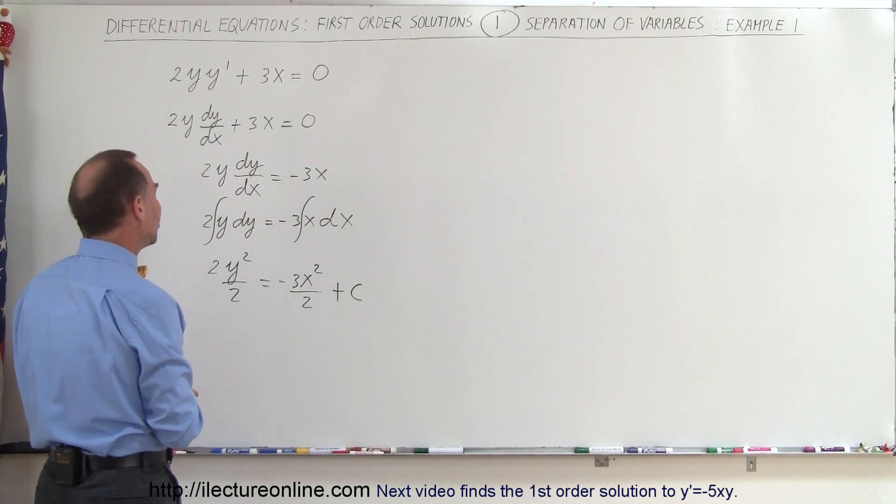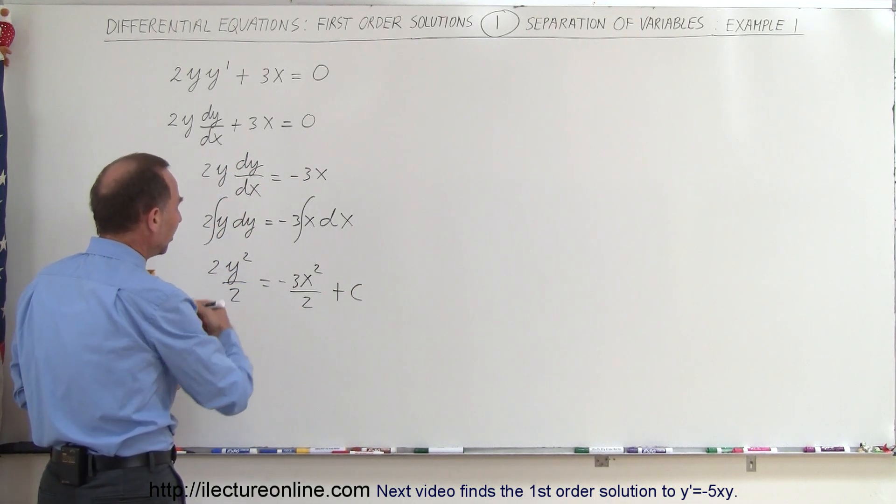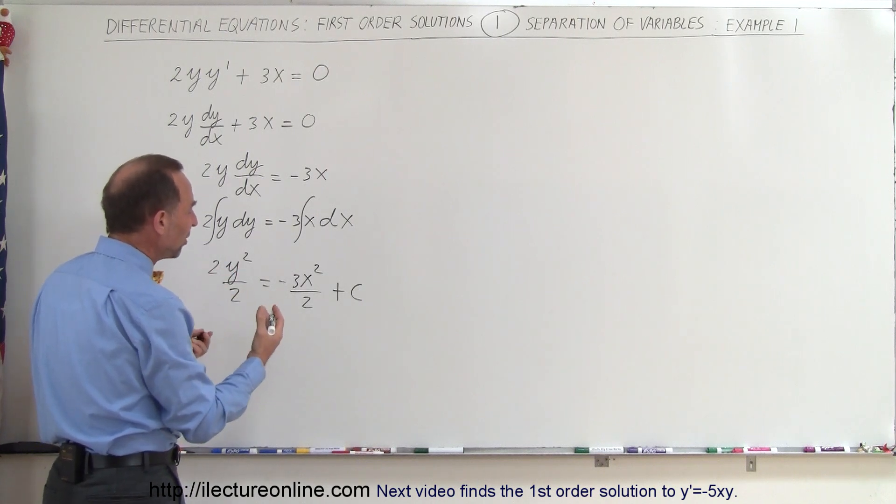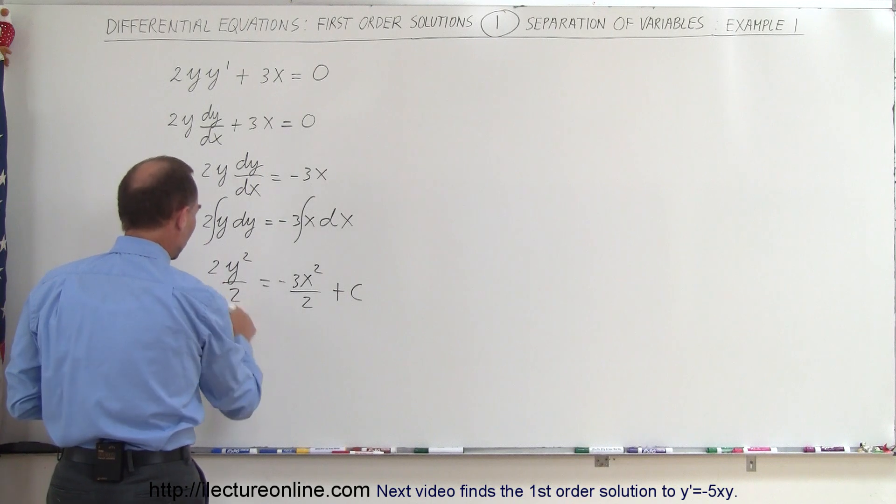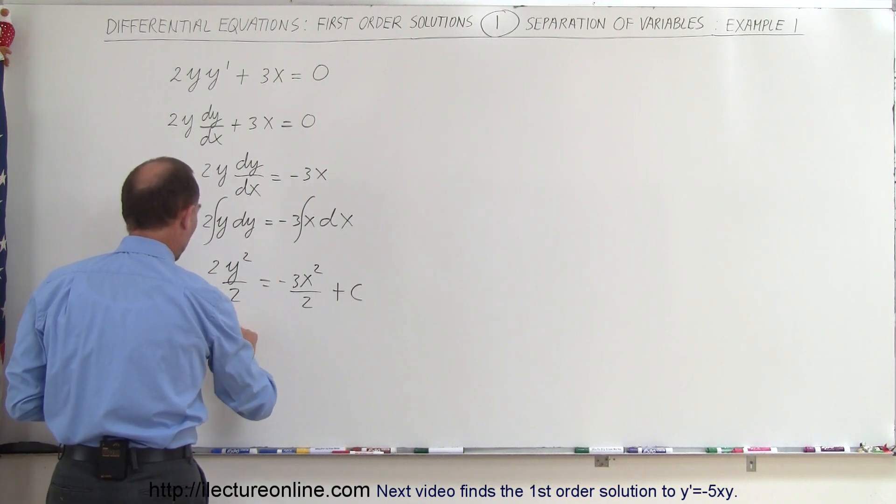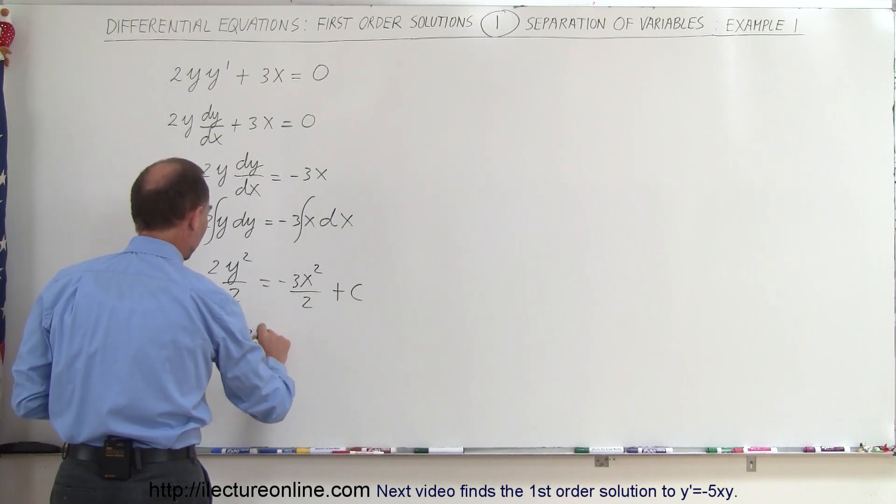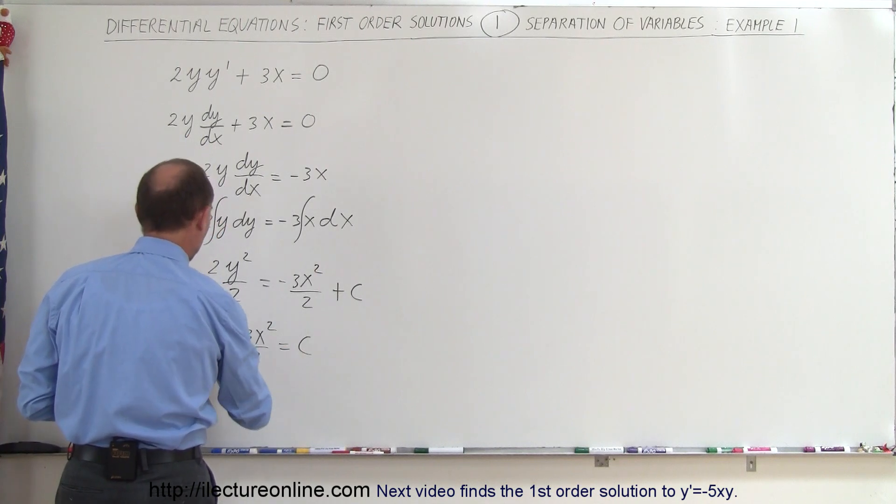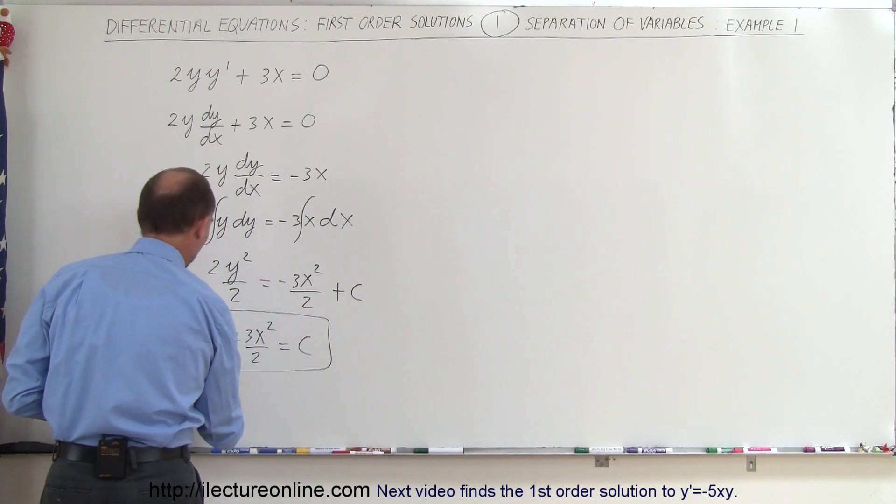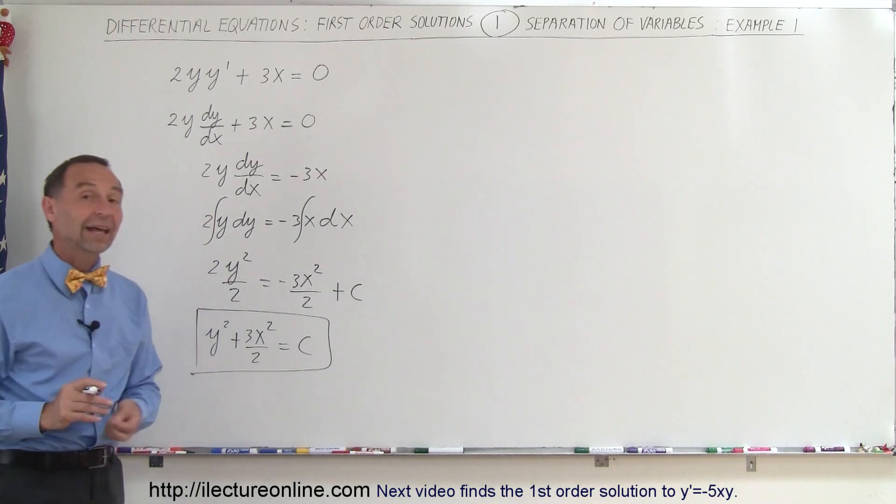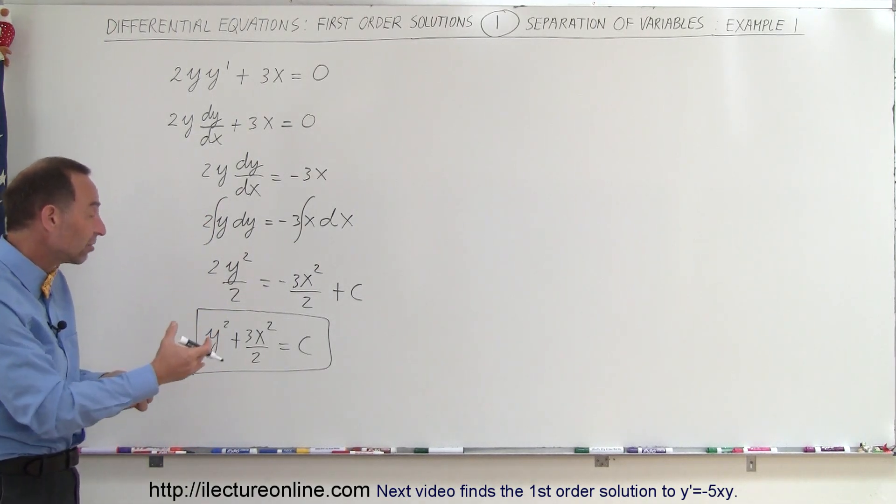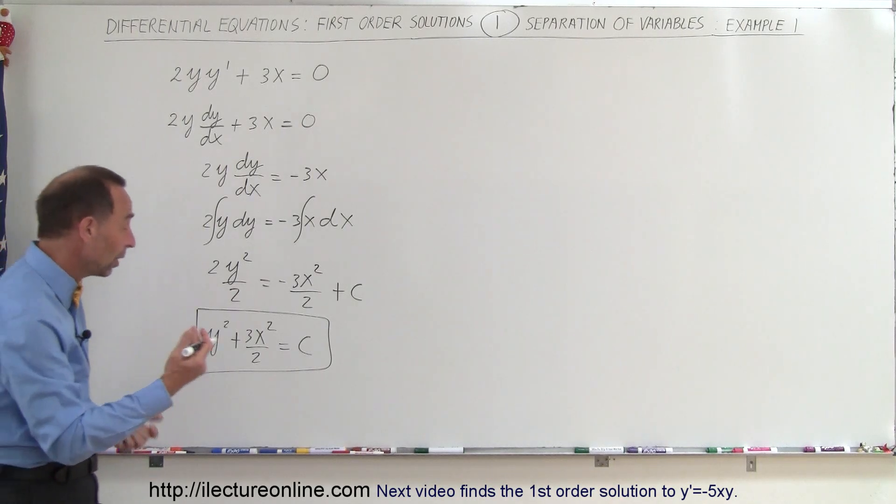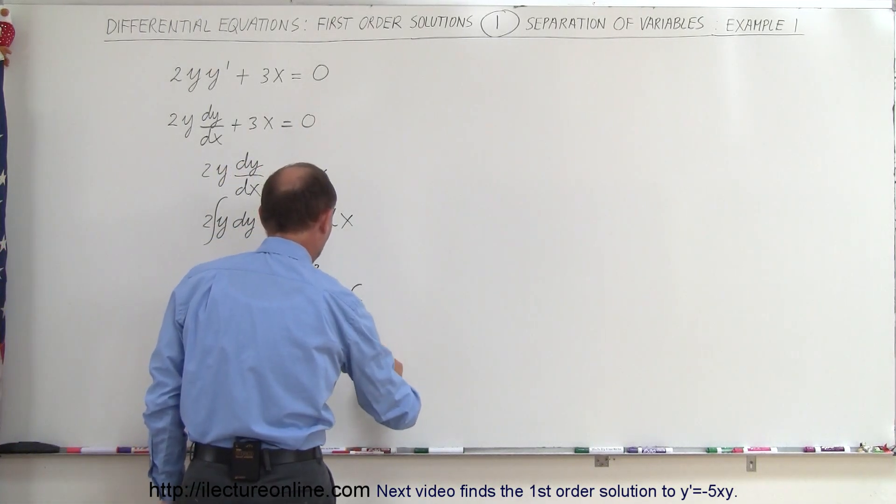And so now what we could do is we could solve this equation for y by itself, or more typically you move everything over to one side and you could say that the two cancel out, so we have y squared plus 3x squared divided by 2 is equal to c. And you could probably say that's probably a good way to write the final answer for this. So even though we don't specifically have it as y in terms of x, although you could do that.